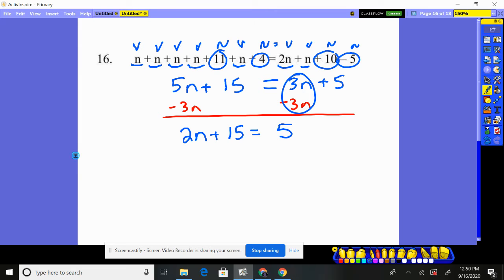Now, it doesn't make sense to move the five over to the 15. It makes more sense to move the 15 over to be with the five. So I'm going to move it by subtracting 15 from both sides. This will get my variable two n by itself on the left, and on the right, I'll get my number by itself. So it's exactly what I wanted. All variables on one side, all numbers on the other.